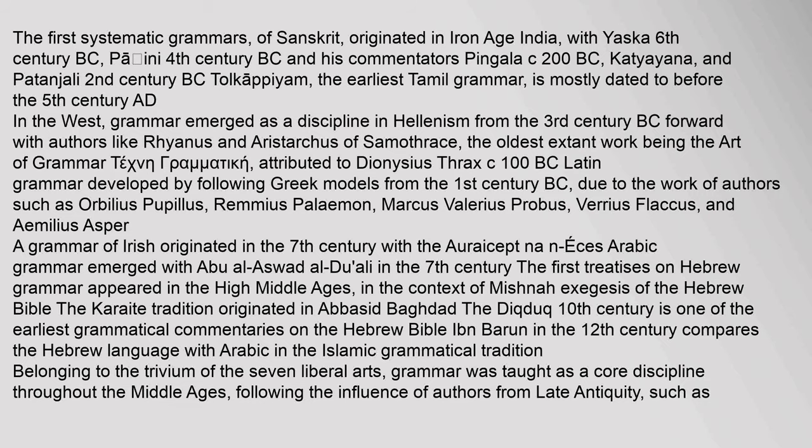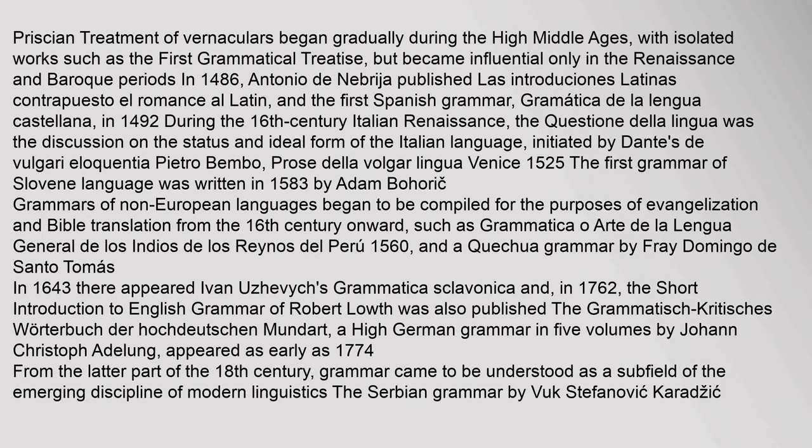Latin grammar developed by following Greek models from the 1st century BC, due to the work of authors such as Orbilius Pupillus, Remmius Palaemon, Marcus Valerius Probus, Varius Flaccus, and Aemilius Asper. A grammar of Irish originated in the 7th century with the Auraicept na n-Éces. Arabic grammar emerged with Abu al-Aswad al-Du'ali in the 7th century. The first treatises on Hebrew grammar appeared in the High Middle Ages in the context of Mishnaic exegesis of the Hebrew Bible. In the Islamic grammatical tradition, grammar was taught as a core discipline throughout the Middle Ages, following the influence of authors from late antiquity such as Priscian. Treatment of vernaculars began gradually during the High Middle Ages, with isolated works such as the First Grammatical Treatise, but became influential only in the Renaissance and Baroque periods.